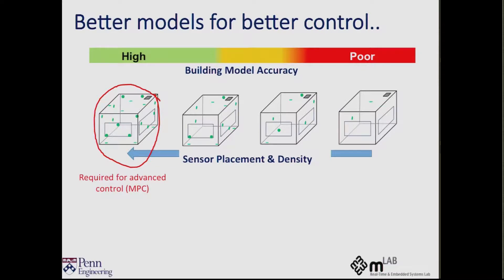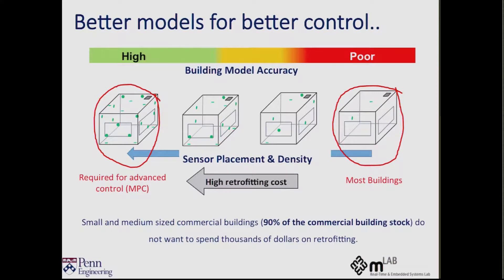But also a requirement to getting these higher models, high accuracy models, is that you need a lot of sensors. You need a lot of data from the buildings to train this model of high fidelity, but unfortunately most buildings don't come pre-configured with several thousands of sensors that we see on campuses and on research facilities in general.